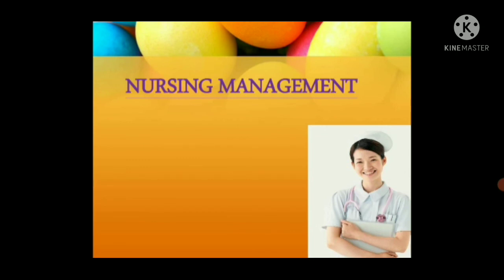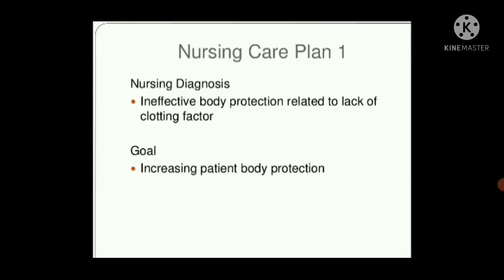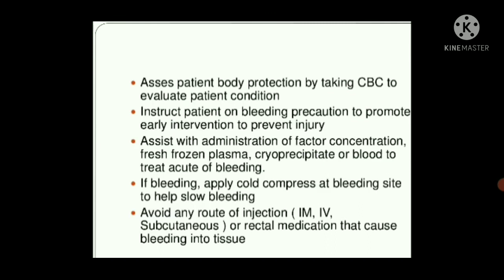Nursing management — first nursing diagnosis: ineffective body protection related to lack of clotting factor. Goal: increase the patient's body protection. Interventions: assess patient body protection by taking a complete blood count to evaluate patient condition, instruct the patient on bleeding precautions to promote early intervention and prevent injury, assist with administration of factor concentrates and fresh frozen plasma, apply cold compression at the bleeding site, and avoid any injection route — IM, IV, or subcutaneous — that may cause bleeding.